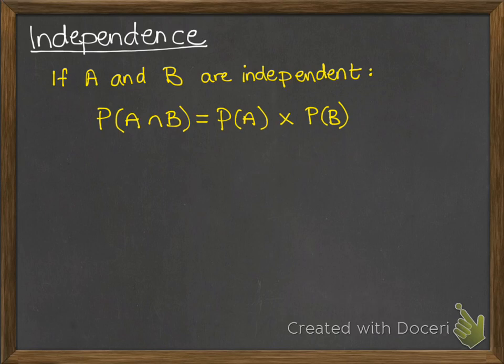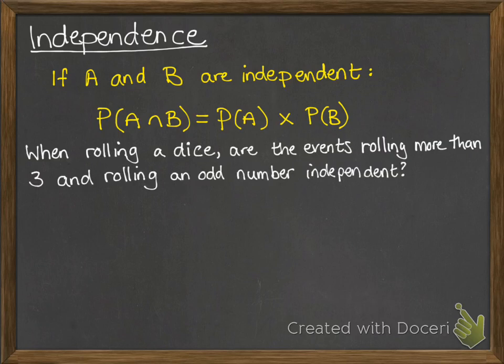So, what does this look like in a question? When rolling a dice, are the events of rolling more than a 3 and rolling an odd number independent? Would one affect the other? That's what we're looking at for independence — is one reliant on the other, is one affected by the other one's outcome?